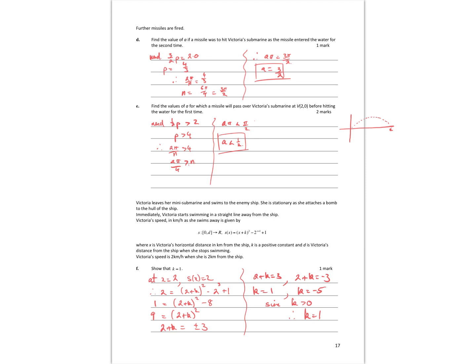For further missiles — find the values of a if a missile hits Victoria's submarine as it enters the water for the second time. That means one and a half periods must equal 2.0, and going through the same mathematics, a will need to equal 3/2. For a missile to pass over Victoria at 2.0 before hitting the water for the first time, half the period must be greater than 2, so the full period must be greater than 4. That means 2π/n must be greater than 4, and rearranging gives a less than π/2.